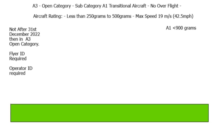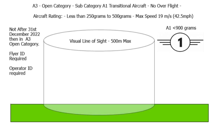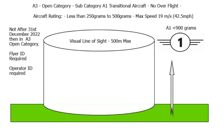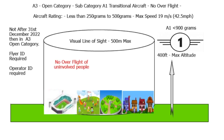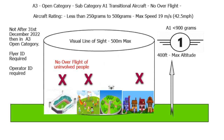Next we have the A1 subcategory, and this is for transitional aircraft: 250 grams to 500 grams, max speed 90 meters per second, with no overflight — so no overflight of uninvolved people. All you need is your operator ID, read the manual, and preferably do the flyer ID. The A2 Certificate of Competency is required if flying in built-up areas.